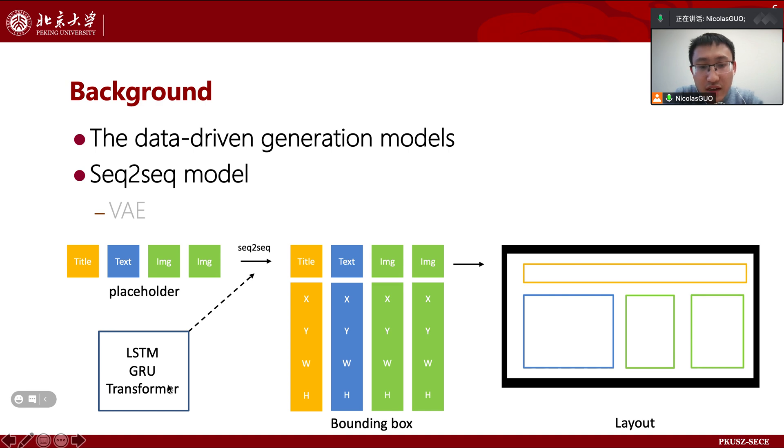Graphic design is essentially a series of components arranged on a canvas. This task can be simplified to a sequence-to-sequence task. We input the components to be arranged, and output the positions and size of those components on a canvas.